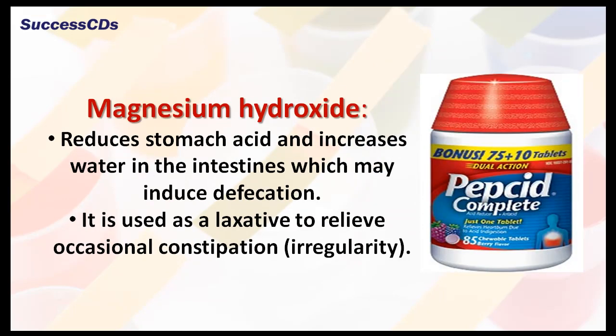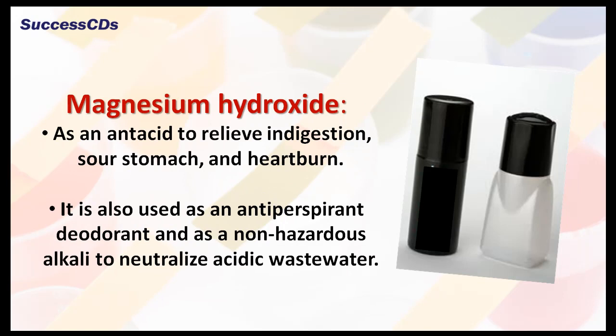Next is magnesium hydroxide. It reduces stomach acid and increases water in the intestines which may induce defecation. It is used as a laxative to relieve occasional constipation. Also used as an antacid to relieve indigestion, sour stomach and heartburn. It is used as an anti-perspirant deodorant and as a non-hazardous alkali to neutralize acidic waste water.